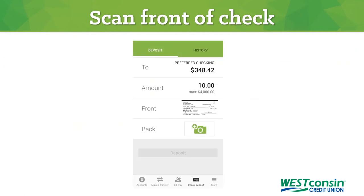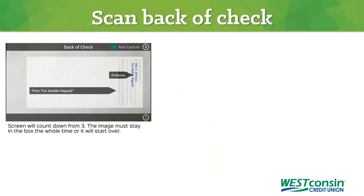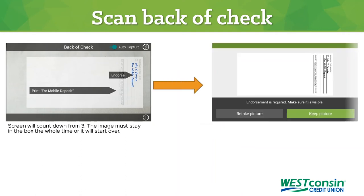Then you will need to take a photo of the back of the check. Tap the green camera icon to scan the check. Make sure you have signed the check and printed 'for mobile deposit' in the endorsement section. If the photo shows all edges of the check and the endorsement is visible, choose keep picture.